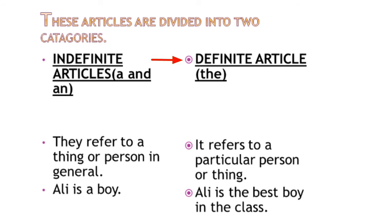The definite article 'the' refers to a particular person or thing. It is used before singular countable nouns, plural countable nouns, and uncountable nouns, but only when specifying them. For example: Ali is the best boy in the class.